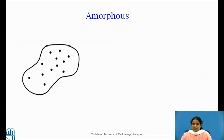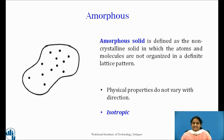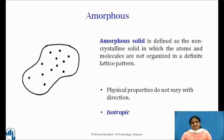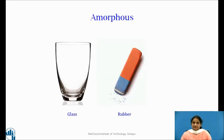The third category is amorphous solid. An amorphous solid is defined as a non-crystalline solid in which atoms and molecules are not organized in a definite lattice pattern. Physical properties are independent of the direction of measurement, and therefore they are called isotropic substances. They possess only short-range order, maintain a fixed volume and shape, and resemble solids in their external features, but internally they do not have an ordered crystalline arrangement. Glass, rubber, and many polymers are examples of amorphous solids.